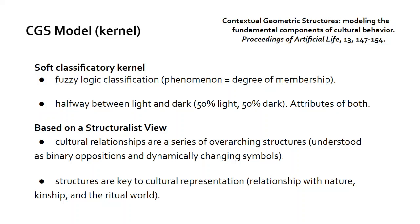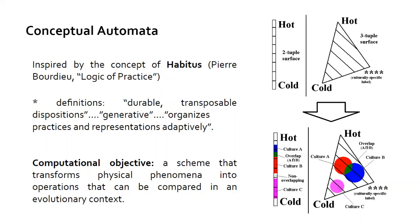Cultural relationships, according to structuralism, were a series of overarching structures: binary opposition or dynamically changing symbols. Structures are actually the key to cultural representation. These are things that operate above our immediate cognitive world that shape our relationship with nature, kinship, and the ritual world. This is an attractive way of modeling if you want to get a handle on the world that the agent is embedded in or the contextual world that it shares with its other agents. These are conceptual automata. This is actually inspired a little bit by the concept of the habitus by Pierre Bourdieu. In that book, Logic of Practice, Pierre Bourdieu talks about these durable, transposable dispositions that are generative and organize practices and representations adaptively. Our computational objective is much more straightforward: a scheme that transforms physical phenomena into operations that can be compared in an evolutionary context.